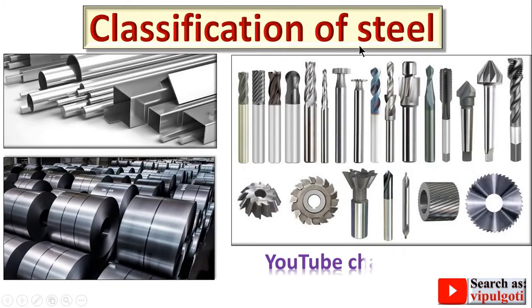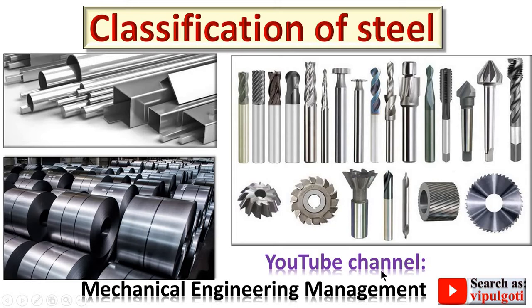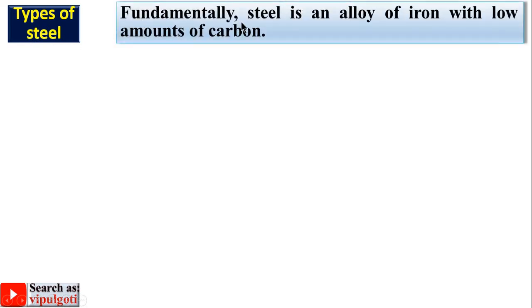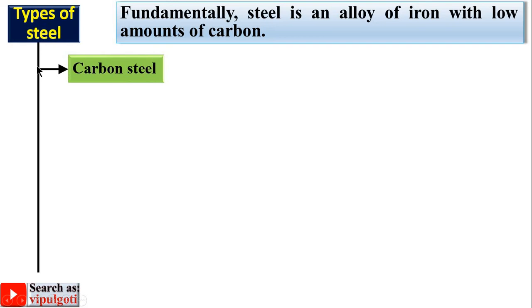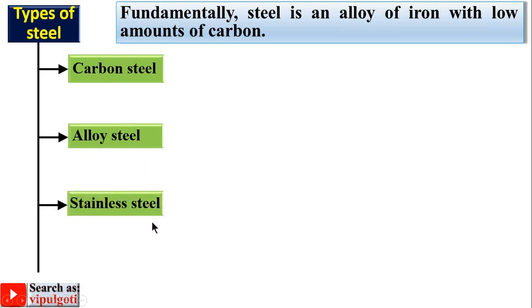Today I am going to teach you classification of steel. First, you should know what exactly steel is — fundamentally, steel is an alloy of iron with low amounts of carbon. The steels are broadly classified in four different categories: first, carbon steel; second, alloy steel; third, stainless steel; and fourth, tool steel.